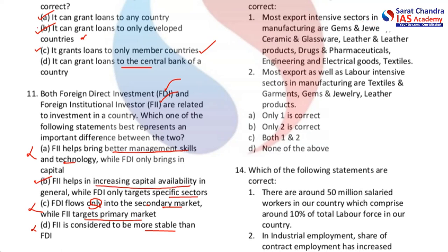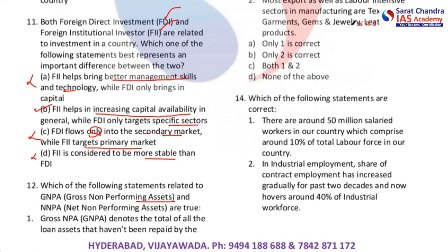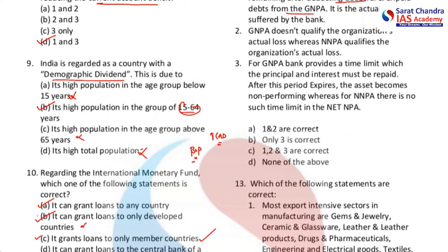Next question: which of the following statements related to GNPA and NNPA are true? Gross non-performing assets and net non-performing assets are two terms used in tandem in banking parlance. GNPA denotes the total of all loan assets that haven't been repaid by borrowers within a 90-day period. NNPA is the amount remaining after deducting doubtful and unpaid debts from GNPA, and it represents the actual loss suffered by the bank.